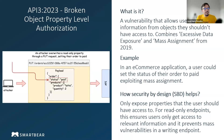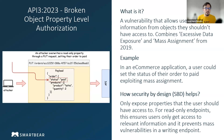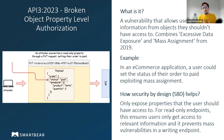The next topic is Broken Object Property Level Authorization. We mentioned before the idea of Broken Object Level Authorization — the ability to access resources that don't belong to you. In this case, the idea is having access to properties in those objects that you shouldn't be able to access, either to modify or to read. This vulnerability in 2023 brings together two vulnerabilities from the 2019 edition.